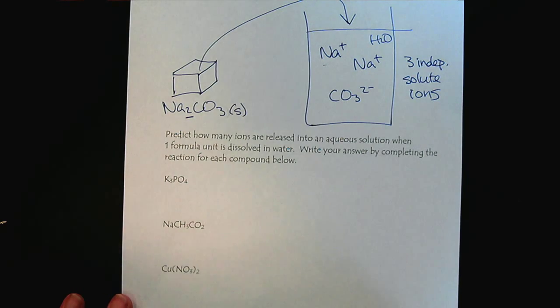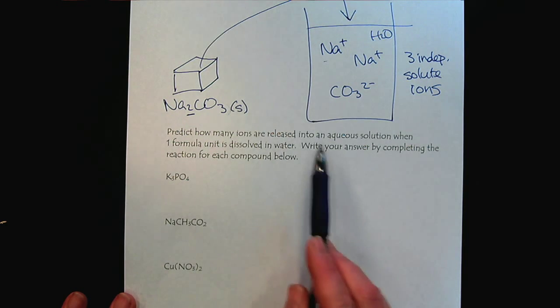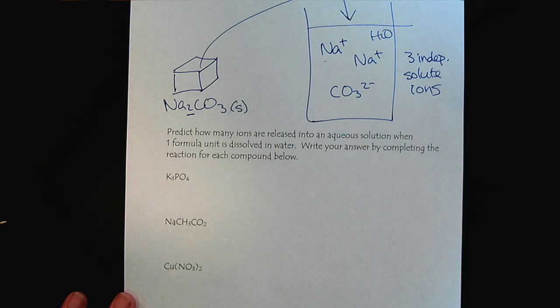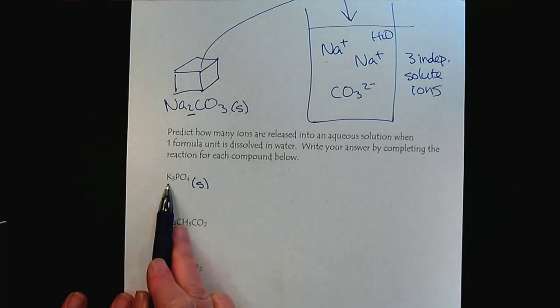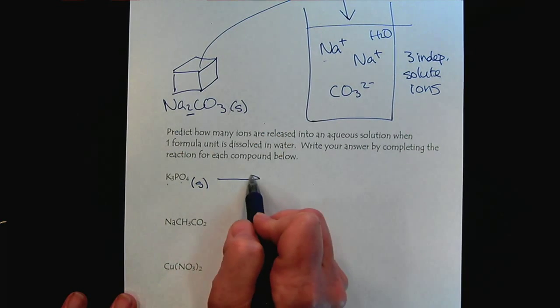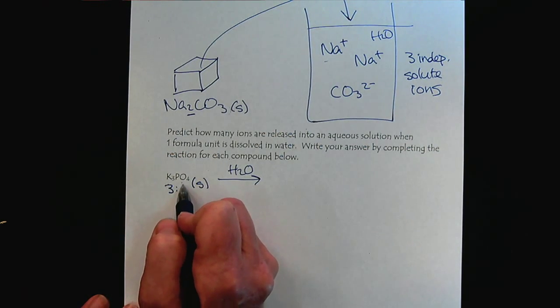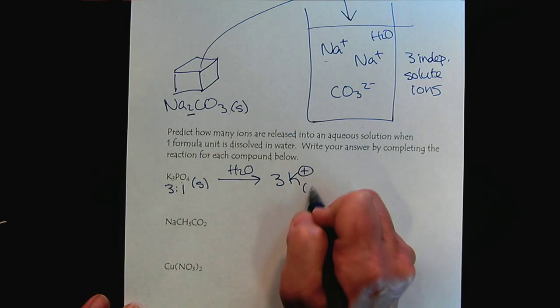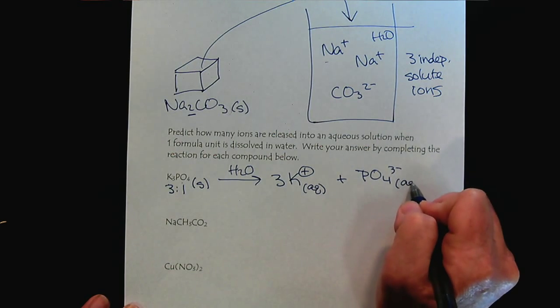So, as you're working with the ionic compounds, remember to keep the idea of their ratio in your mind. So, let's predict how many ions are released into an aqueous solution when one formula unit is dissolved in water. And let's go ahead and write our answers like a chemical reaction. So, we're starting with potassium phosphate and then we're going to dissolve it in water. And so, we see that we have a ratio of three potassiums to one phosphate. So, this would create three potassium ions and one phosphate ion.